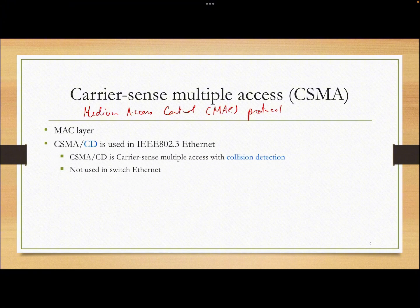The MAC layer is the sublayer of Layer 2 of the OSI model. You have the MAC sublayer and the LLC sublayer for Layer 2 for LAN — local area network.